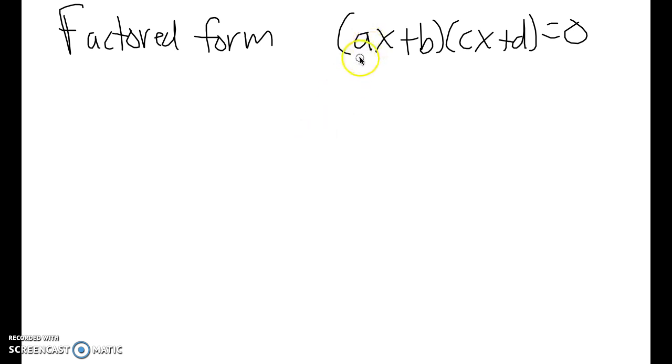Often when you're starting out solving these, the A value and the C value are equal to one. So you might see something just as simple as X minus six times X plus seven equals zero.